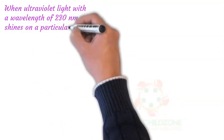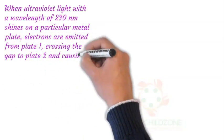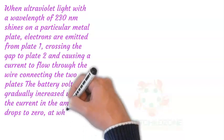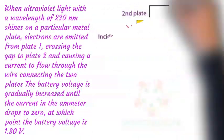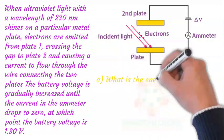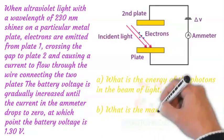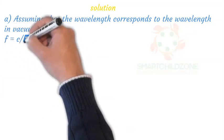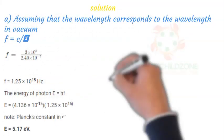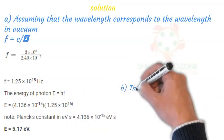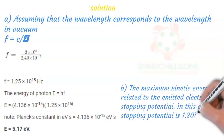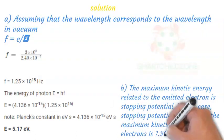When ultraviolet light with a wavelength of 230 nanometers shines on a particular metal plate, electrons are emitted from plate 1, crossing the gap to plate 2, and causing a current to flow through the wire connecting the two plates. The battery voltage is gradually increased until the current in the ammeter drops to zero, at which point the battery voltage is 1.30 volts. A: What is the energy of the photons in the beam of light in electron volts? B: What is the maximum kinetic energy of the emitted electrons in electron volts? The maximum kinetic energy is related to the stopping potential, which in this case is 1.30 volts. So the maximum kinetic energy of the electrons is 1.30 electron volts.